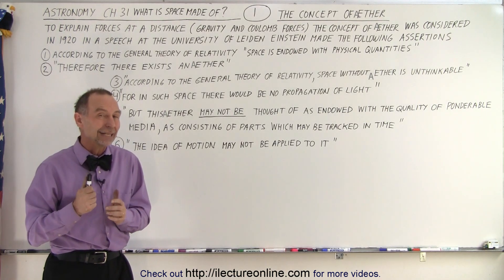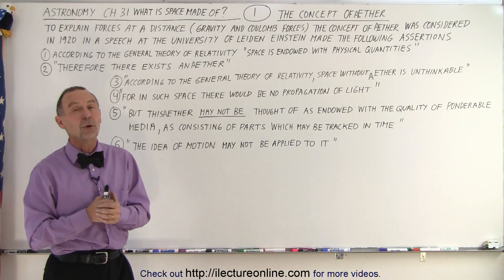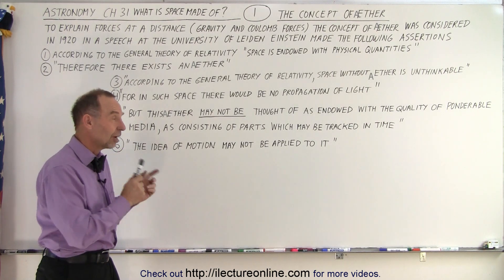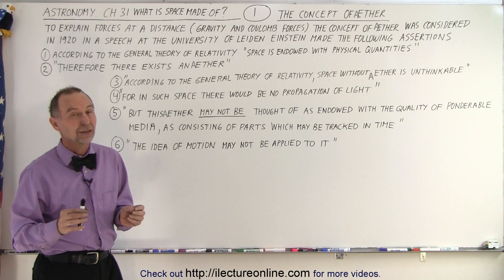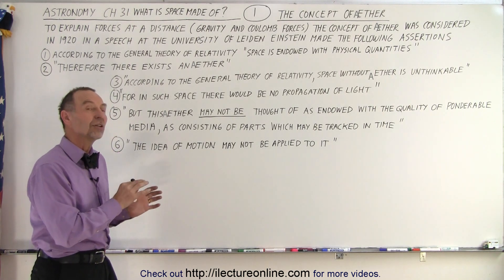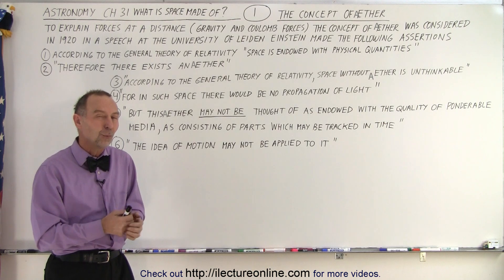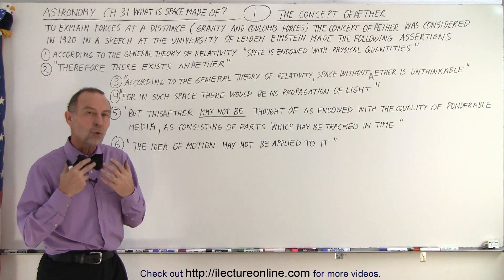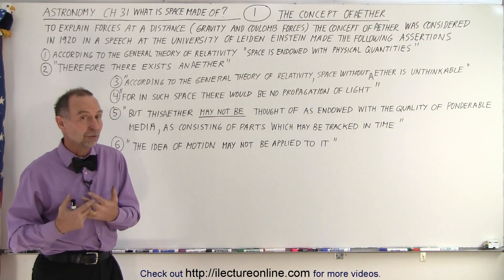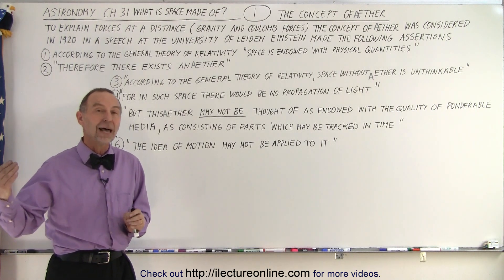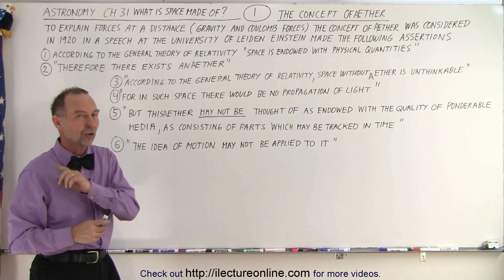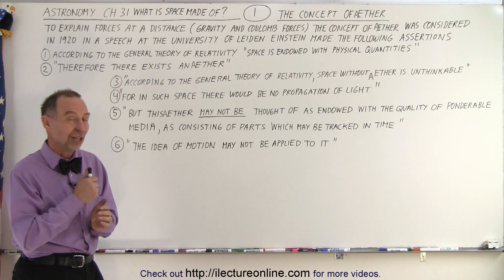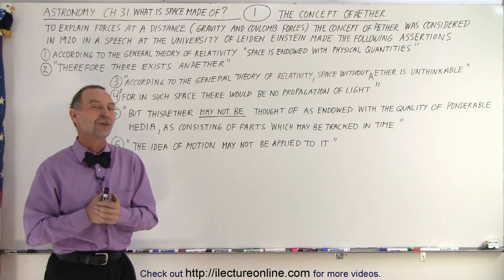This was the speech Einstein made in 1920. At some point he thought that he made a big mistake — that it wasn't ether, or maybe something else. But the concept here, in retrospect, is probably dead on. So we're going to explore this a little bit more in the videos to come. What is ether? Well, it's just a name — but space has some sort of property, some sort of quality, that allows electricity and magnetism to flow through it, and that allows light to change direction under the influence of gravity, even though light doesn't have mass.